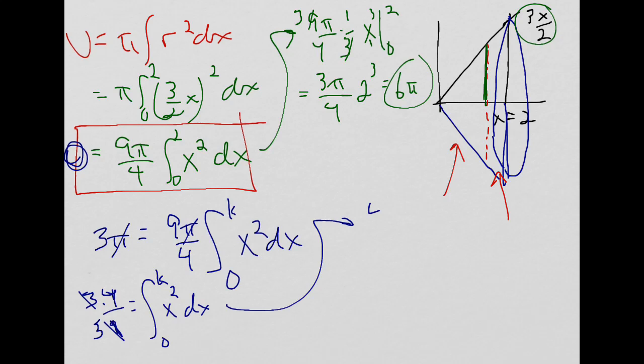And then let me do my integration. So x squared integrates to x cubed over 3 evaluated from 0 to k. Well, you should see that these, I can multiply by 3 on both sides, right?